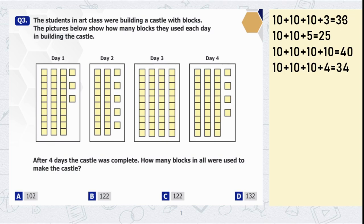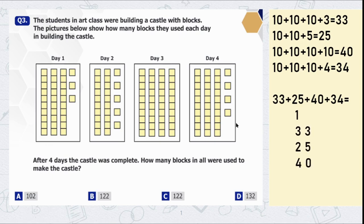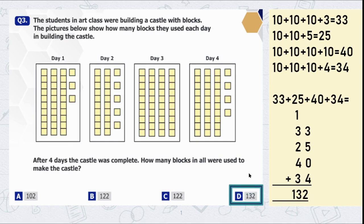Now we are going to add all the values. So 33 plus 25 plus 40 plus 34 is equal to 132. 3 plus 5 plus 4 is equal to 12: 2 came down and 1 was given as a carry. So 1 plus 3 plus 2 plus 4 plus 3 is equal to 13. So option D is the correct one — they used 132 blocks to make the castle.